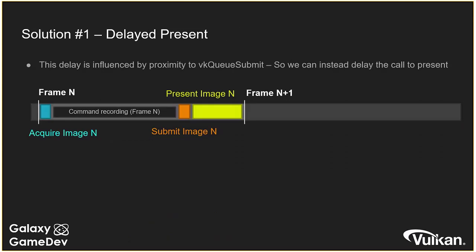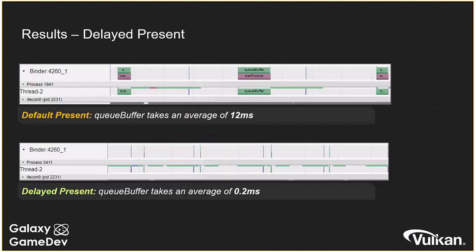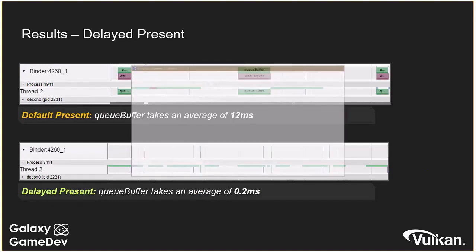The first solution is a delay present. One cause of this issue is that the closer you call present to submit, the longer the delay ends up being. A simple solution is to delay your call to present right before your next frame submit. We're not actually delaying when the image will be shown on screen — we're just delaying the function call to a point where the image is likely already available from the GPU. The image is already rendered and can instantly be flipped to the presentation engine. This can reduce stall time from 12 milliseconds down to about 0.2 milliseconds.